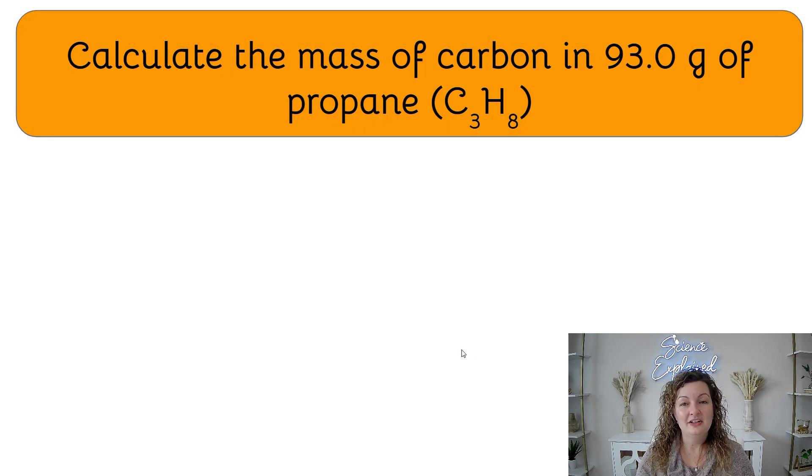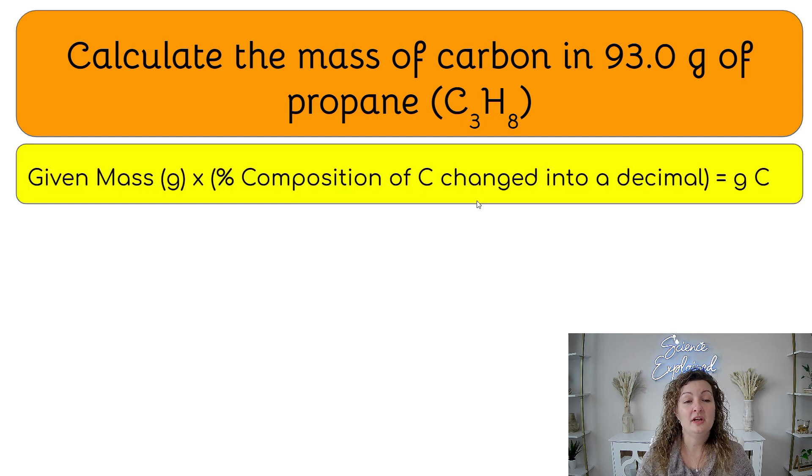Let's try another one. Calculate the mass of carbon in 93 grams of propane. And our formula is still the same, the C3H8. Okay. The very first thing we need to look at is kind of what our roadmap is to do. So we're going to take our given mass, which is this 93 grams.